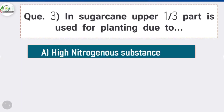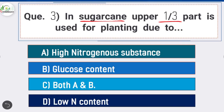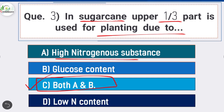Question 3: In sugarcane, the upper one-third part is used for planting due to — option C is correct: both A and B. In sugarcane, the upper one-third part is used for planting due to high nitrogenous substance and glucose content for better germination.